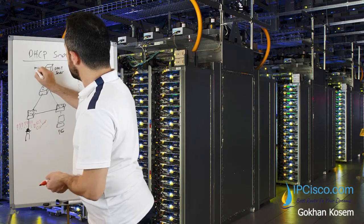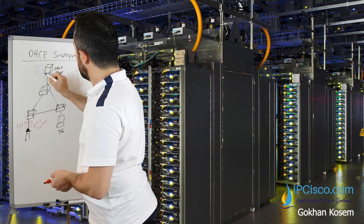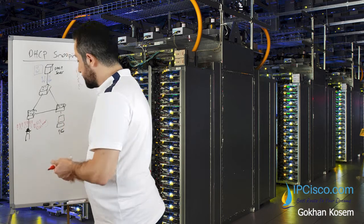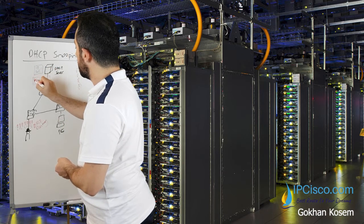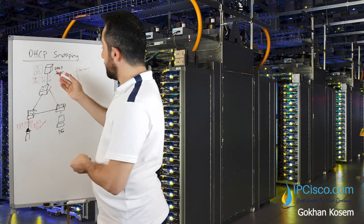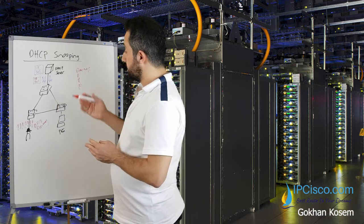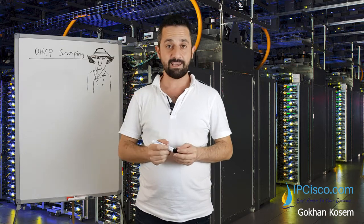The DHCP server has an IP pool. It replies again and again with offers, and after many replies, the IP pool becomes unavailable — it is exhausted. So the server can no longer give IP addresses to our devices or any other new devices joining the network.